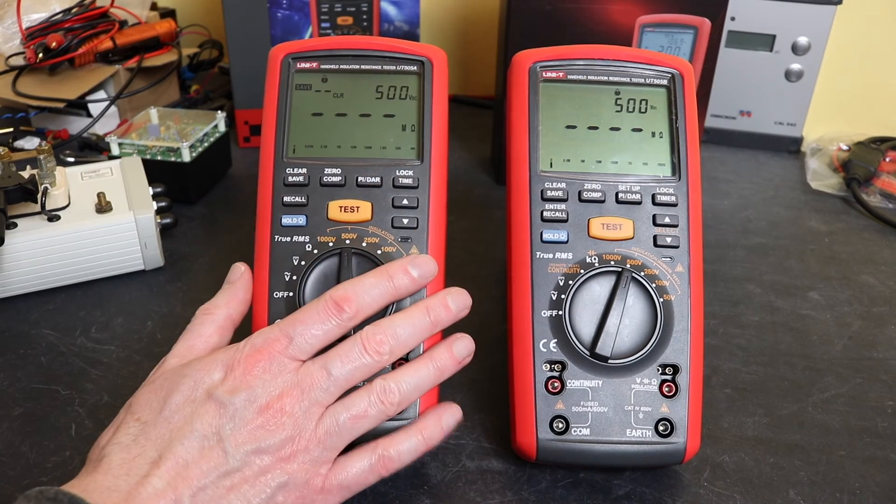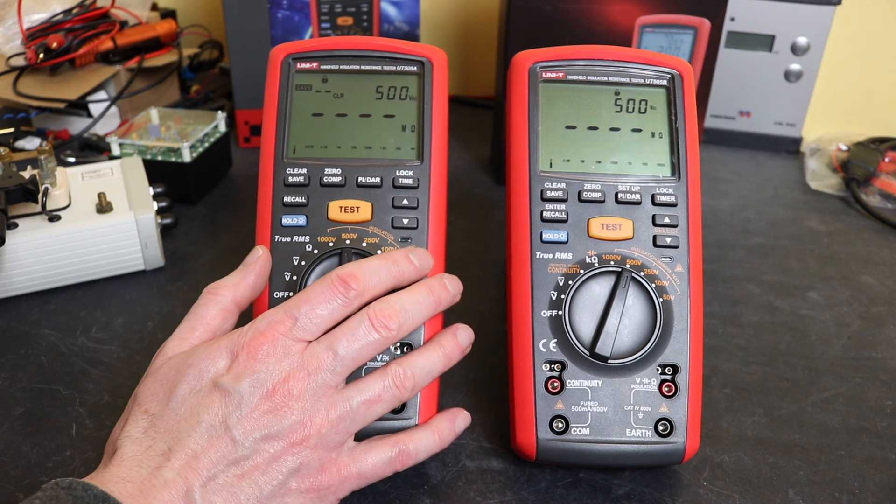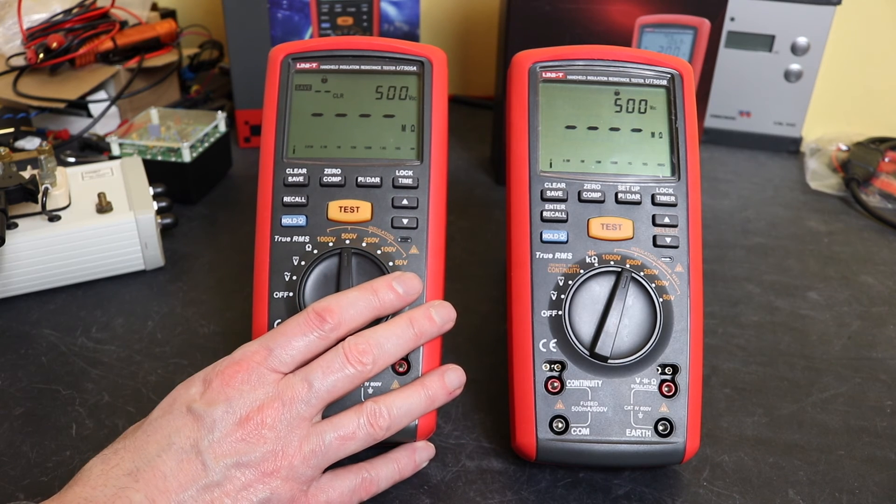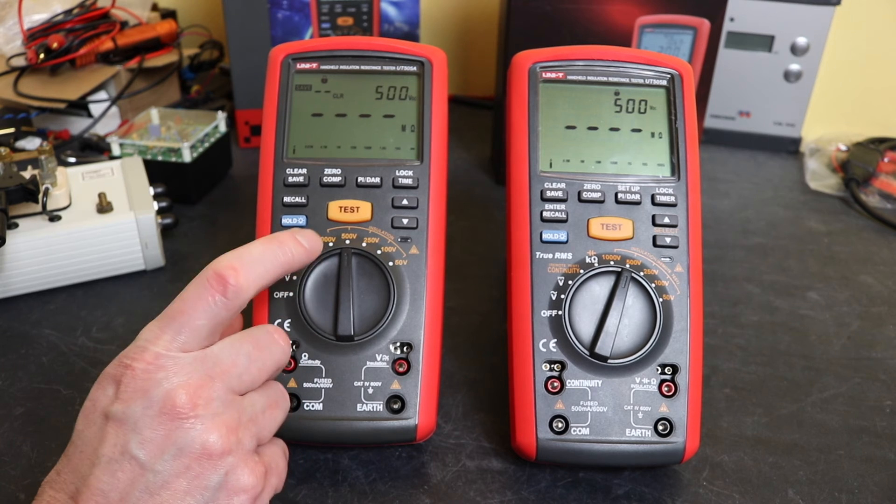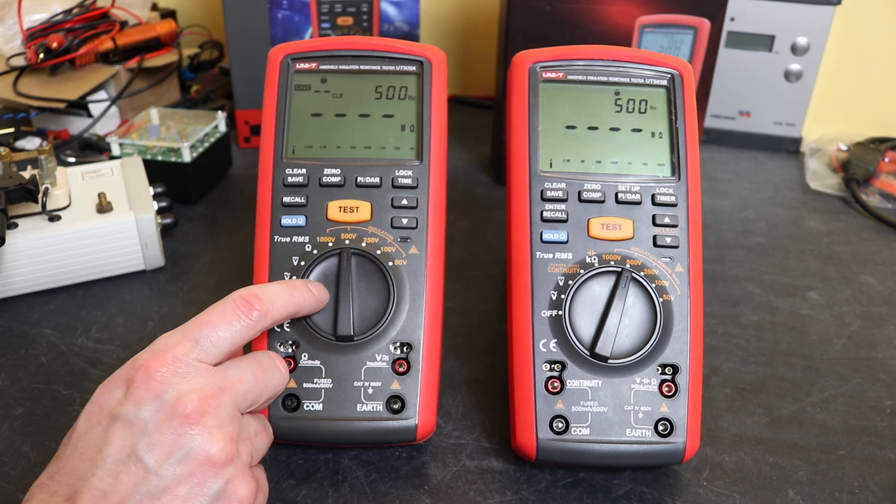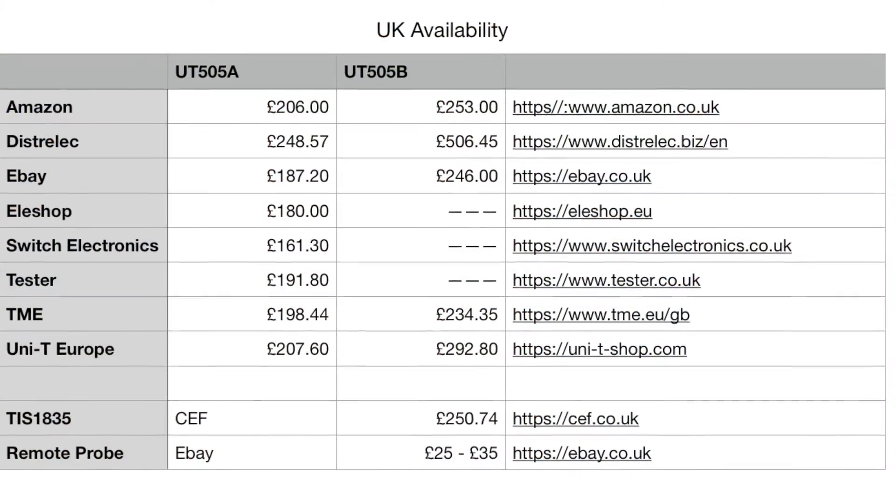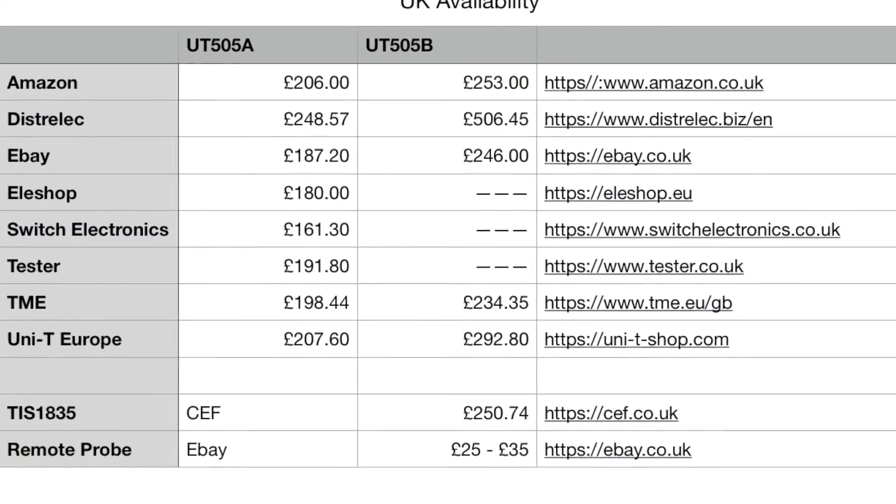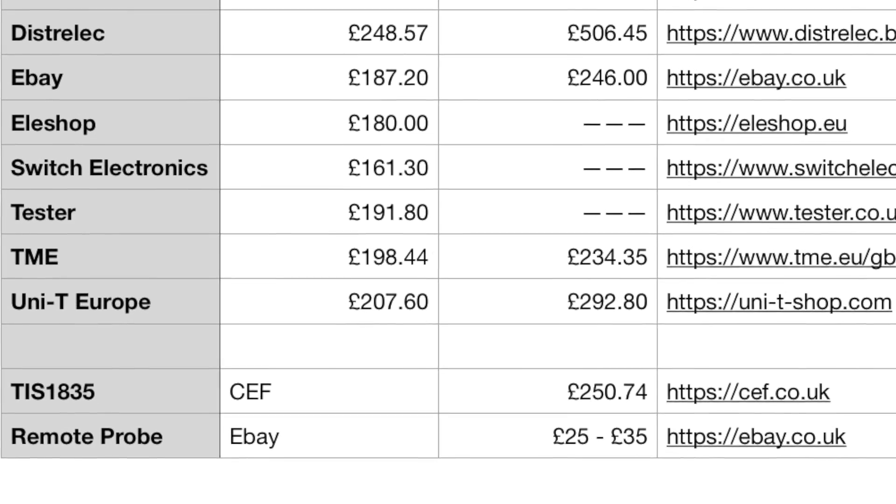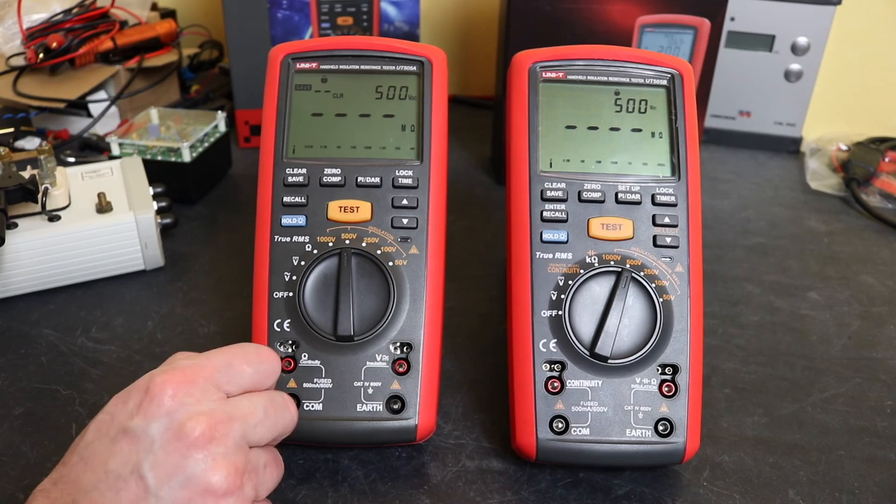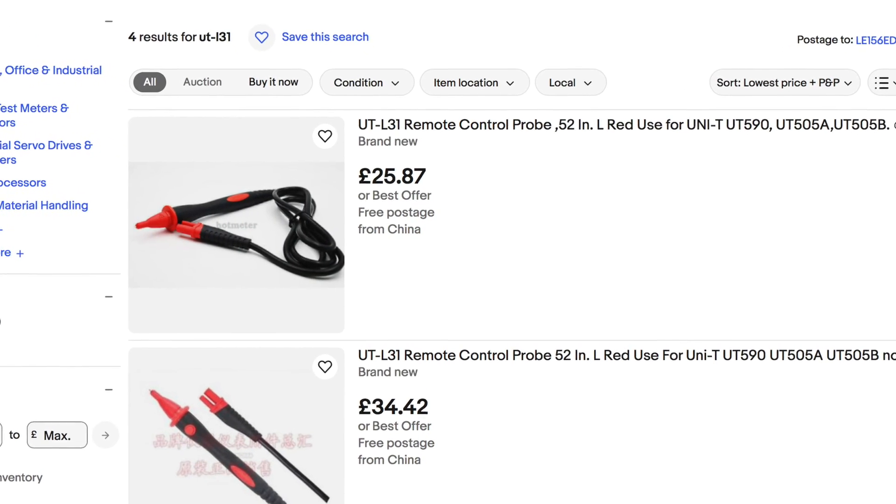It looks exactly the same from the pictures. I don't know if they've changed the way the meter operates - sometimes they do play around with those kind of things. Recommended retail on that is 250 pounds on the CEF website, so it is actually quite pricing in comparison to purchasing it as the UT505A. Also worth noting at the bottom of the table there is the remote probe. You can buy that separately as it doesn't come with this instrument, from eBay it's 25 to 35 pounds. Seems to be a variation of the price there.